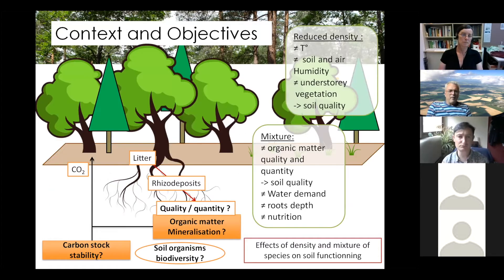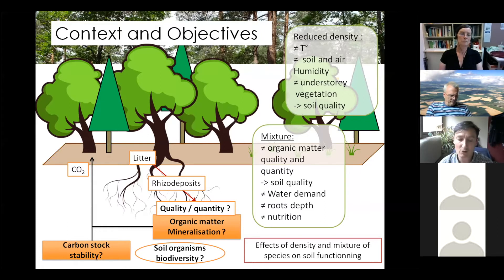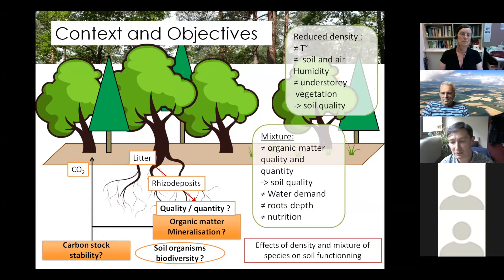This project has the objective to analyze the effect of density and mixture of species, especially on soil functioning, with a focus on quality and quantity of organic matter coming from litter and from rhizodeposition. We are going to analyze the mineralization of this organic matter, the soil organism biodiversity, and the influence of all those activities on carbon stock stability, under mixed and non-mixed species forests with different levels of density.